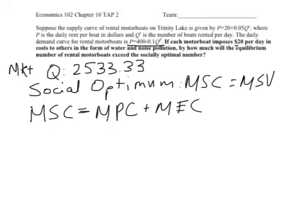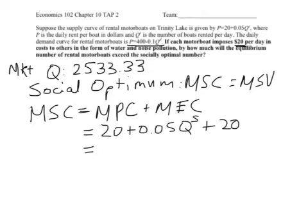and we're given that the marginal external cost is 20, so we can just say that marginal private cost was 20 plus 0.05 QS. Now we're going to add 20 to that, and when we consolidate, that's going to be 40 plus 0.05 QS.